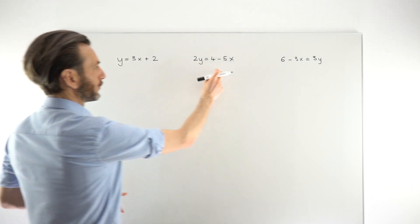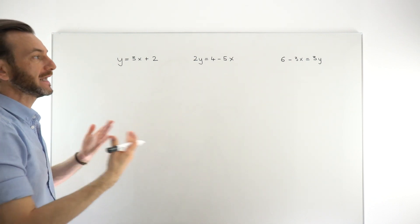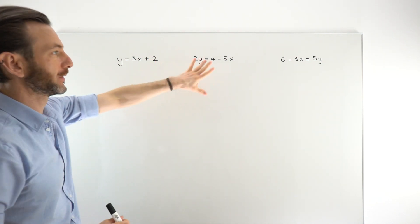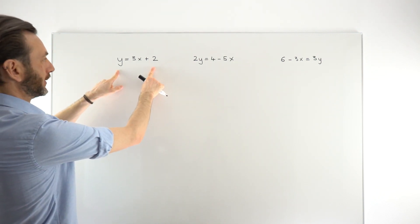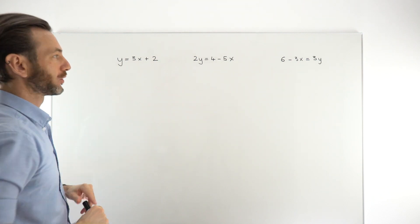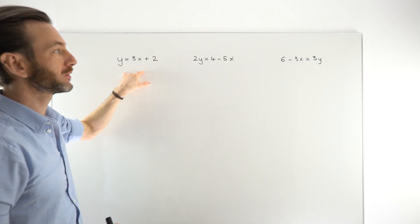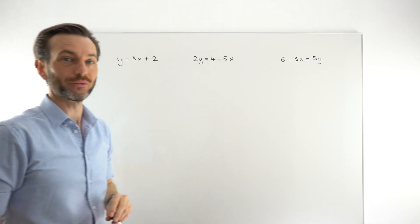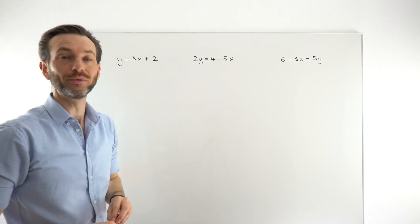I've got three examples for us to work through. They're all in different formats, which is the main skill you've got to learn here — how to deal with different formats, because you're not always going to get straight lines in the friendly y equals mx plus c format. But it's fairly likely you'll see variations, and in particular these sort of jumbled-up formulas.